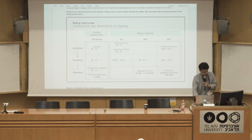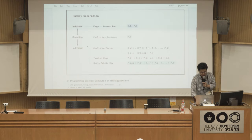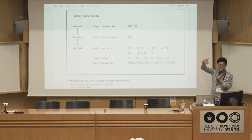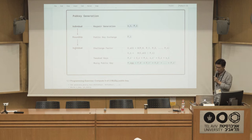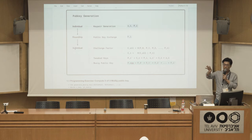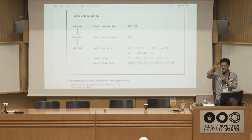Let's start with MuSig pubkey generation. Multiple signers want to create a shared pubkey they can only spend together. There's a problem called the key cancellation attack: if a counterparty takes a key and subtracts someone else's key from it, then after aggregation the attacker can sign for the MuSig key by himself — which is bad.